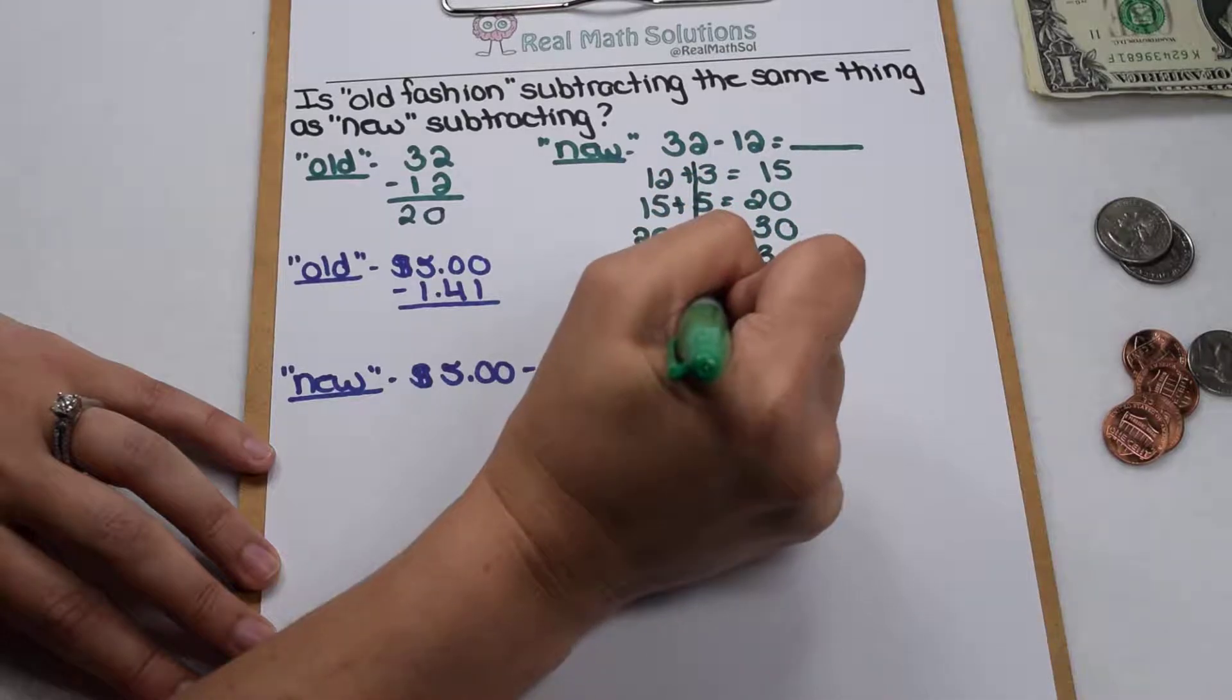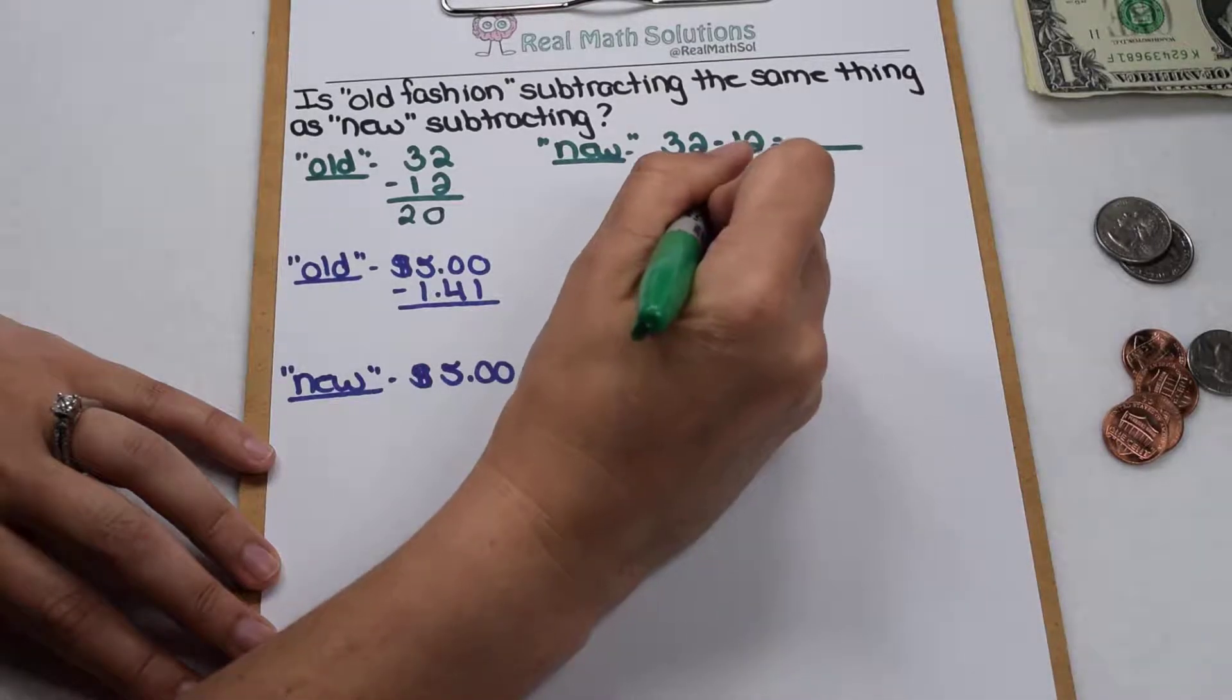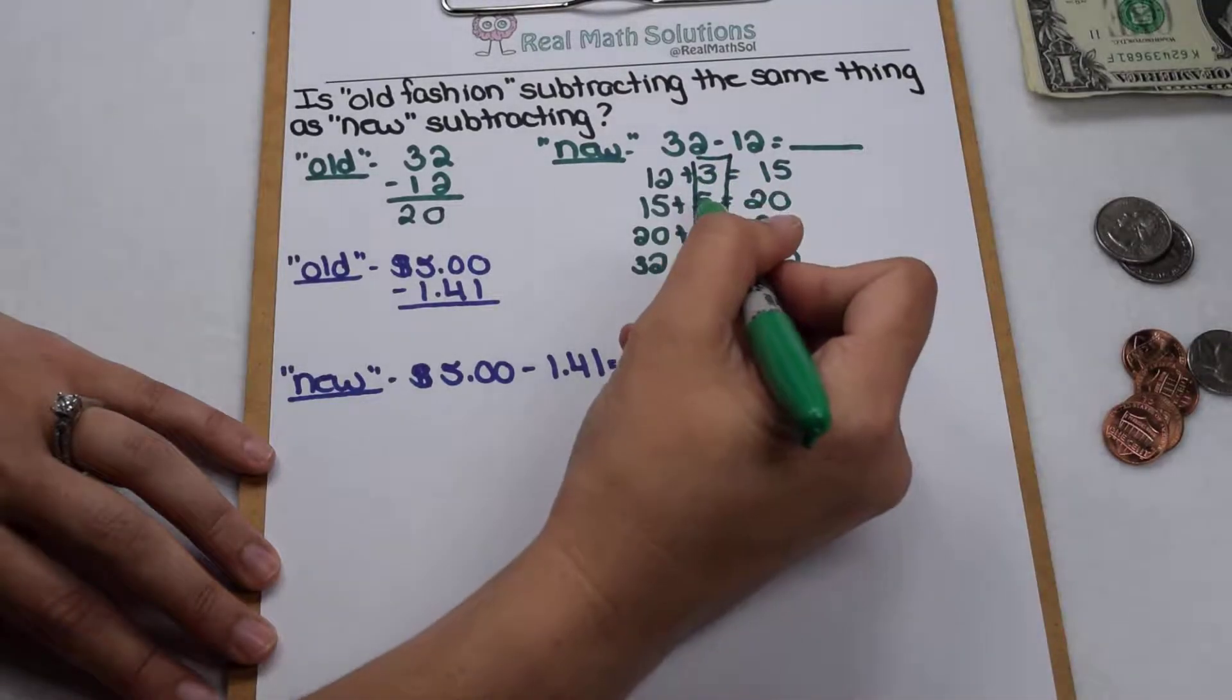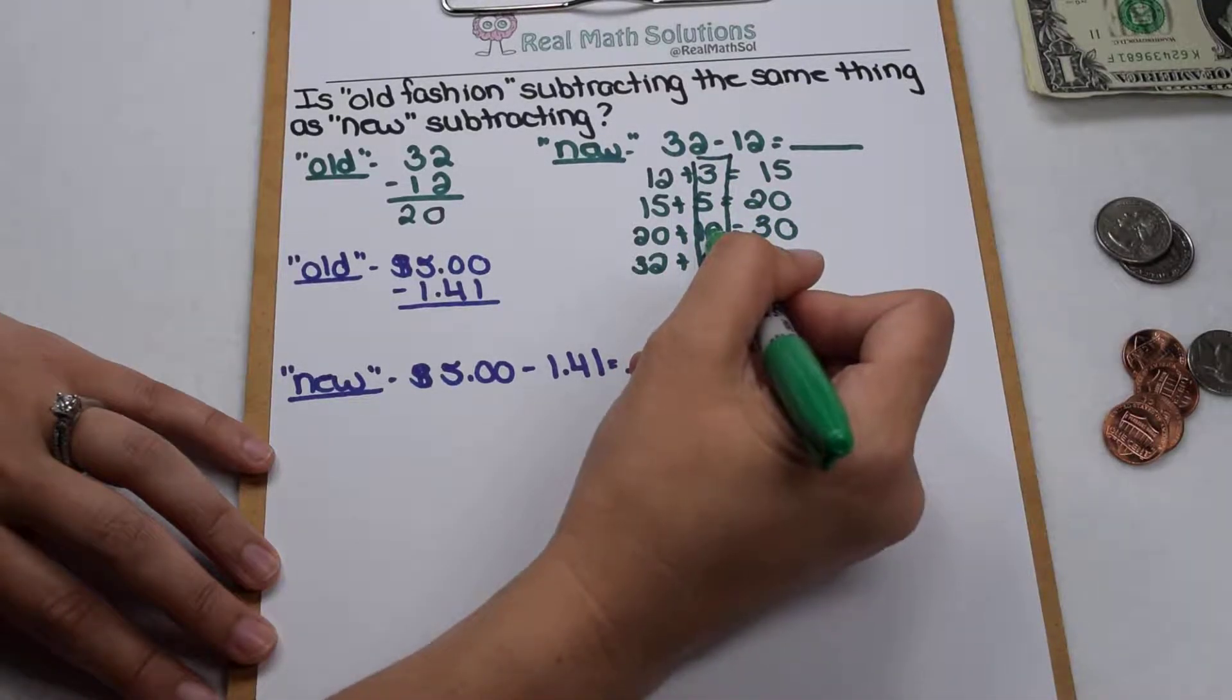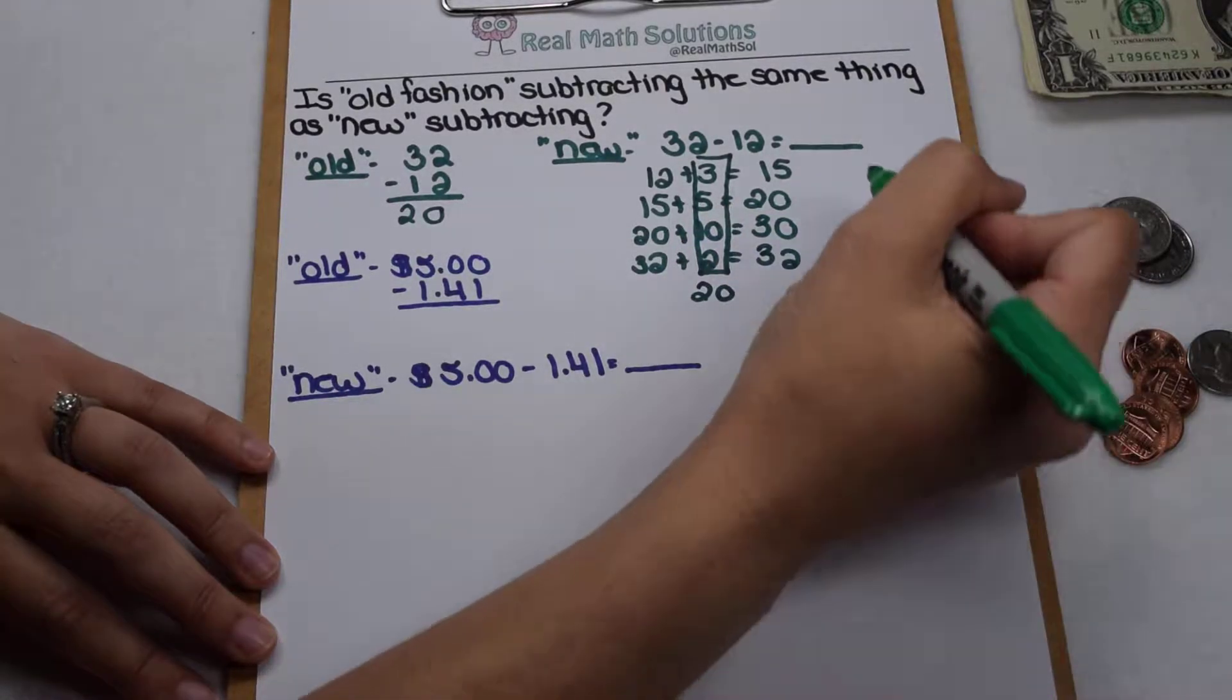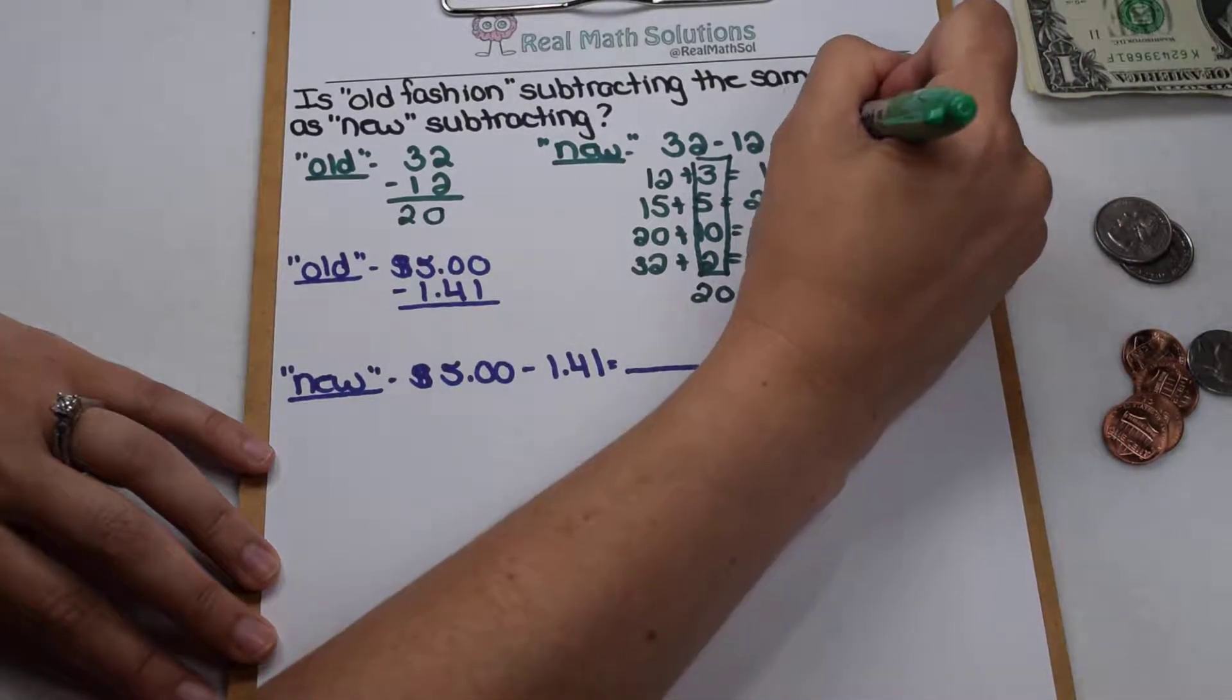Then they can look at the column of values that they counted up from 12 to 32 to find out what the difference is. 3 plus 5 is 8, 8 plus 10 is 18, plus 2 more is 20. So that way they come up with 32 minus 12 to give us 20.